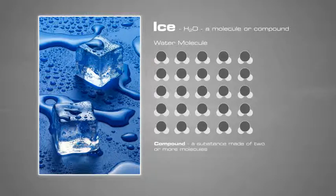A compound is a substance made of two or more molecules. The relationship that we saw between atoms and elements is the same as the relationship between molecules and compounds.